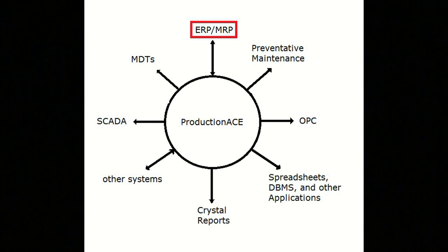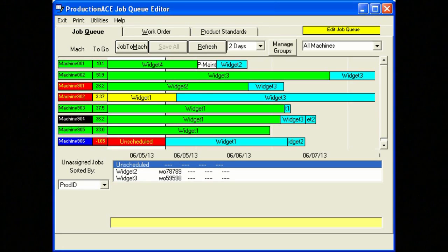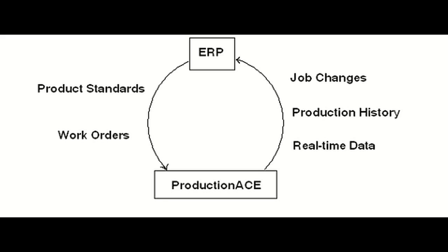The most common of these in use is the ERP interface. Many system users download schedules from their ERP systems to Production ACE and take production data back up. This gives them more accurate data than was manually collected, and also saves them the labor spent on manually collecting it.